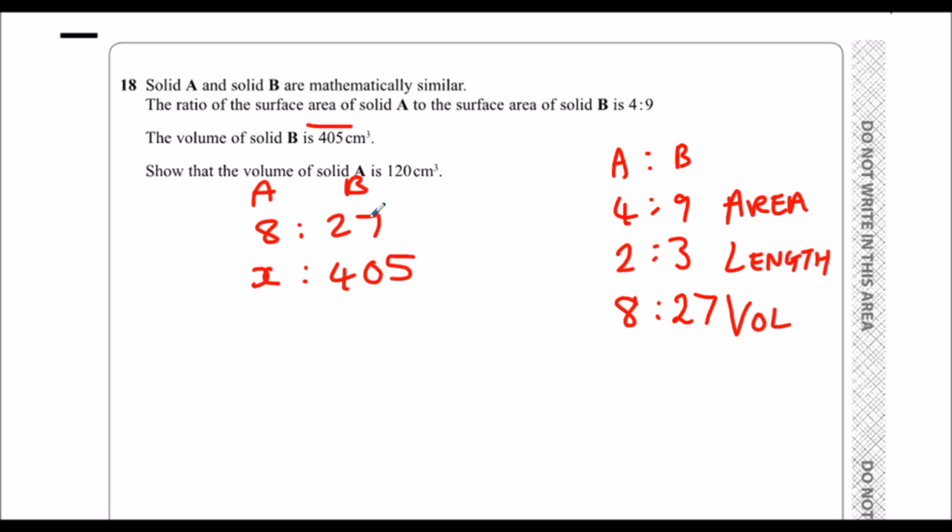So what have I got to times this by? 27 by to get 405. So if I work out what I've got to times this by, I'll times this by the same thing. So 405 divide by 27.